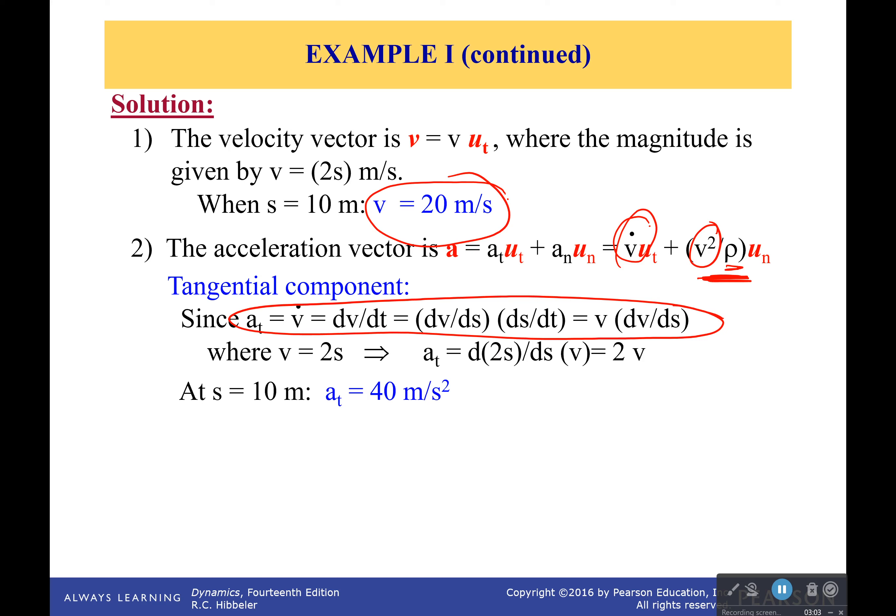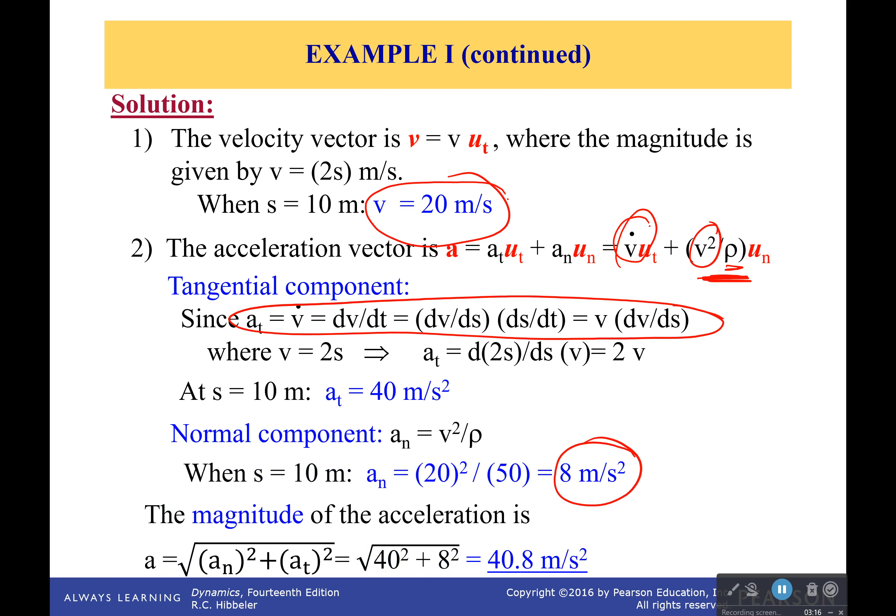Okay, so we know what our tangential is, we plug in our other equation for the normal one, it comes out to be 8 meters per second squared. And therefore, if we wanted to, we can also take the magnitude of acceleration by squaring those components, adding them, and then taking the square root. So it comes out to be 40.8 meters per second squared is the magnitude of the acceleration.